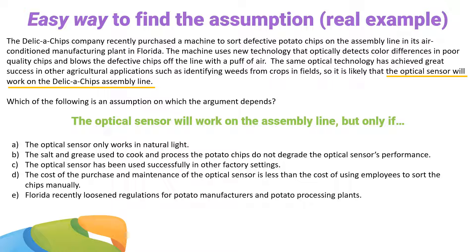Let's take a look at our answer choices. The optical sensor will work on the assembly line, but only if the optical sensor only works in natural light. A is definitely out — the assembly line is inside, so if it only works in natural light, it won't work. Now let's try B: but only if the salt and grease used to cook and process the potato chips do not degrade the optical sensor's performance. B is possible — the only way this sensor is going to work is if the salt and grease in the factory doesn't interfere. Answer choice B simply has to be true for the sensor to work. We'll keep B around; it's a strong contender.